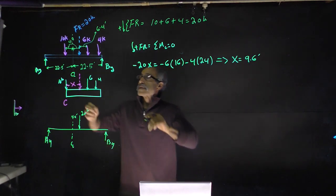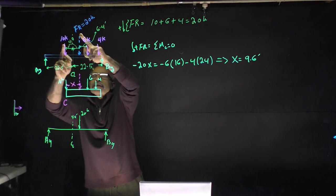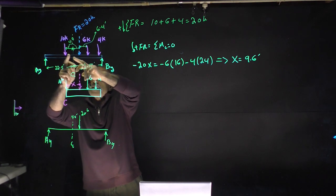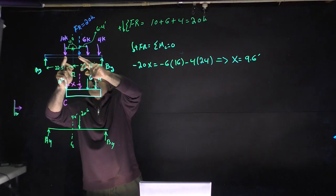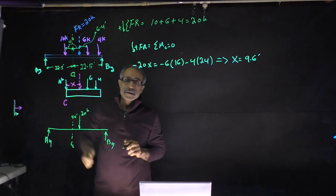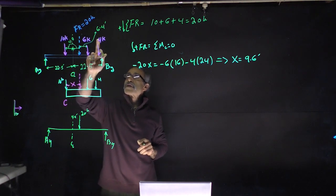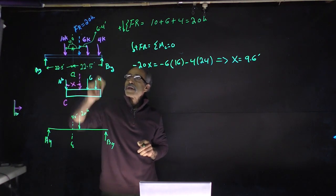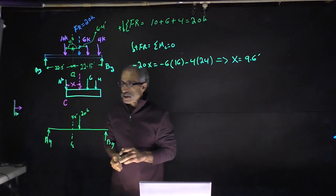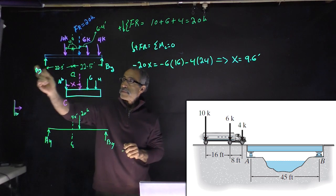So the distance between the resultant force and the 10-kip axle is 9.6 feet. To position the loads for maximum moment, split this distance about the beam centerline: place the loads so that 4.8 feet falls on each side of the center. This means the 10-kip axle and the resultant force are each 4.8 feet from centerline on opposite sides. That positioning gives the maximum moment under the 10-kip axle.